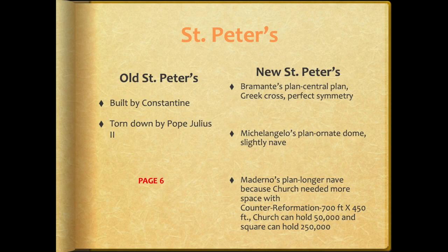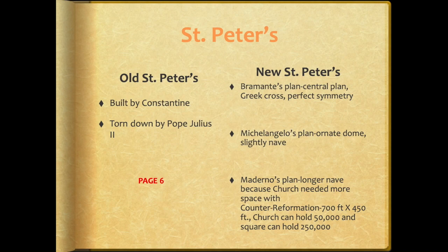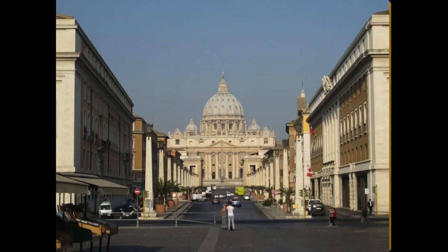The home church of the Catholic faith is Saint Peter's. Old Saint Peter's was a basilican-style church built during the time of Constantine. Pope Julius II in the Renaissance tore it down because it was over a thousand years old and antiquated. New Saint Peter's was commissioned by Julius II. Bramante was the architect who created the overall plan — a centrally planned cathedral that looks like a Greek cross from an aerial view, with perfect symmetry. Michelangelo planned the ornate dome and added a slight nave after Bramante's death. Bernini then created the exterior space where congregants still come today.